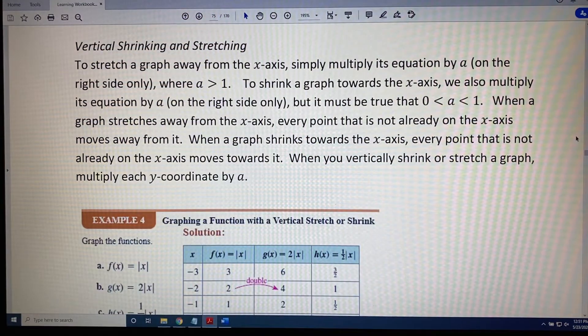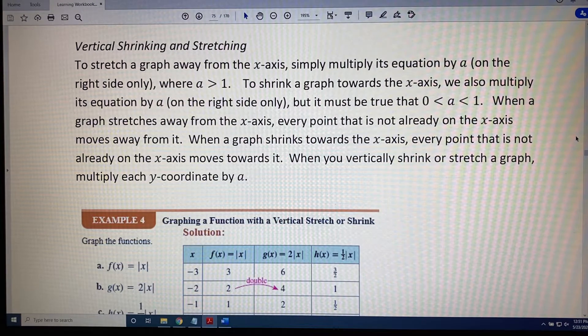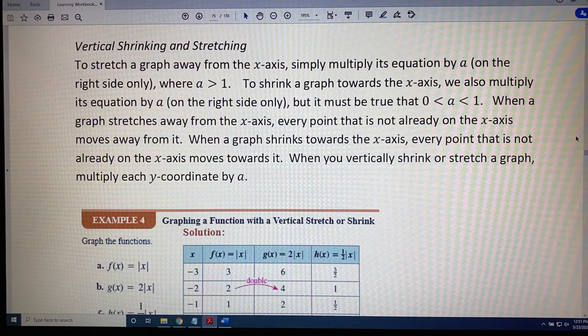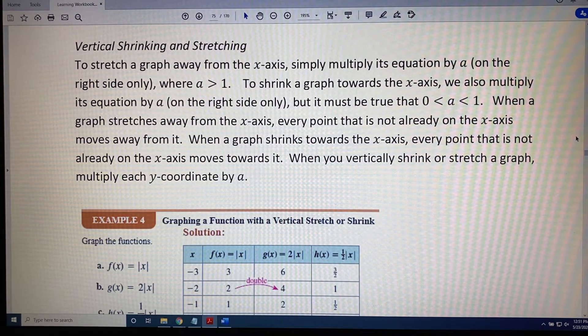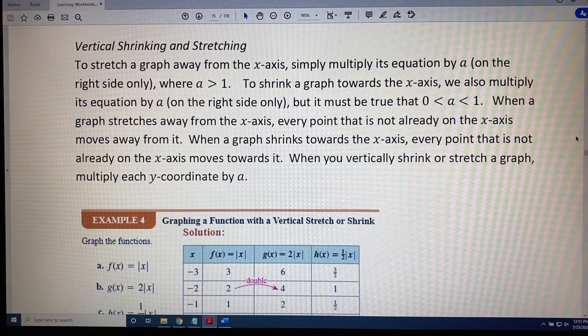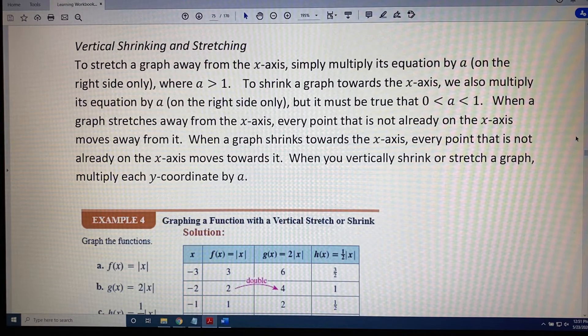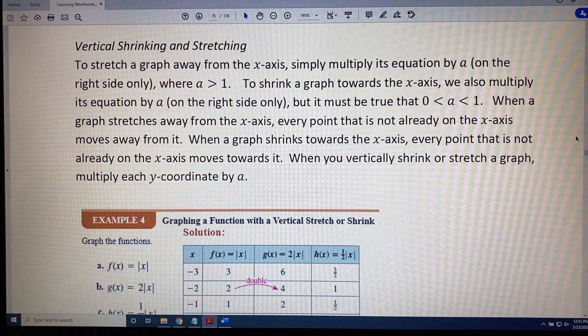To stretch a graph away from the x-axis, simply multiply its equation by a on the right-hand side only, where a is a number greater than 1. To shrink a graph towards the x-axis, we also multiply its equation by a on the right side only, but it must be true that 0 < a < 1. When a graph stretches away from the x-axis, every point that is not already on the x-axis moves away from it.